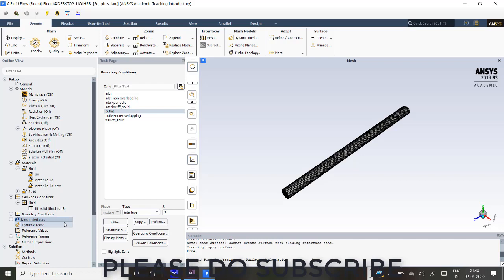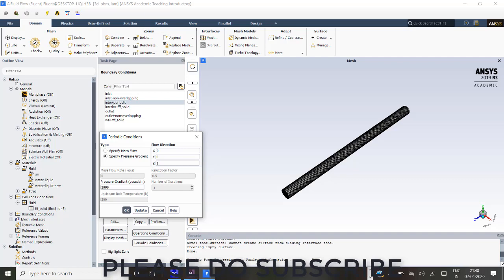That is the periodic interface which helps you in giving the fully developed boundary condition. After creating that you need to go into this boundary condition. Here automatically the periodic boundary condition will be created. You can do the periodic conditions setting here.